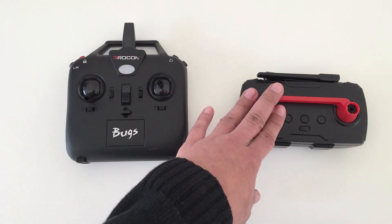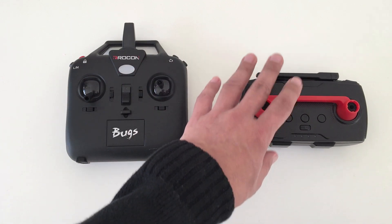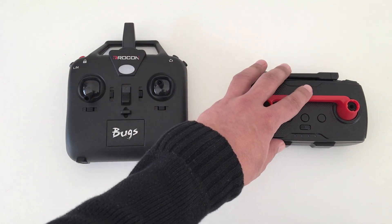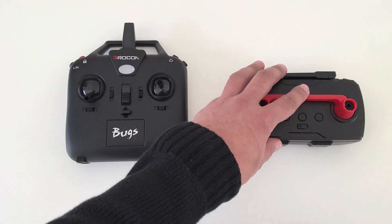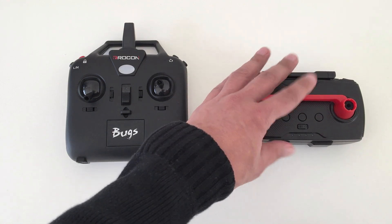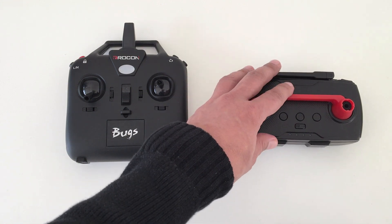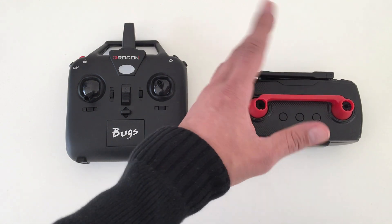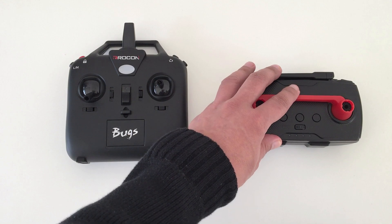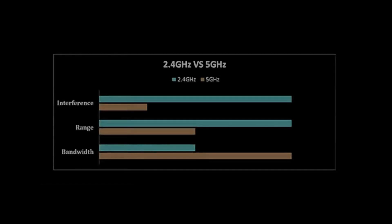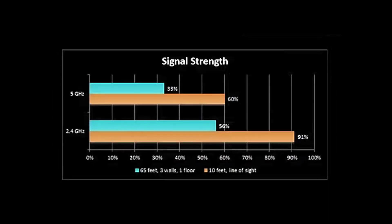5 GHz has the upper hand in the sense that it has a better data transfer rate or bandwidth — which means speed — but it has a shorter distance, so it's not good for long-distance signals.